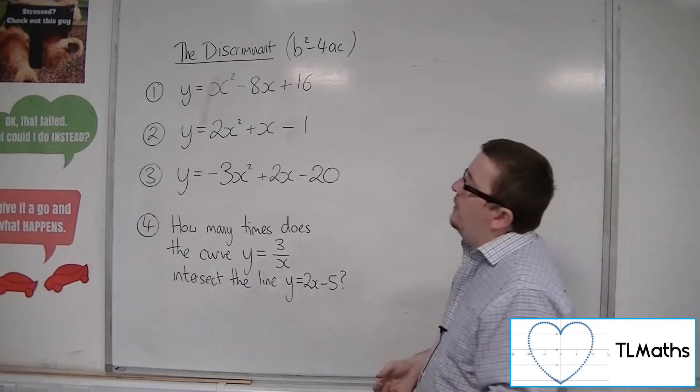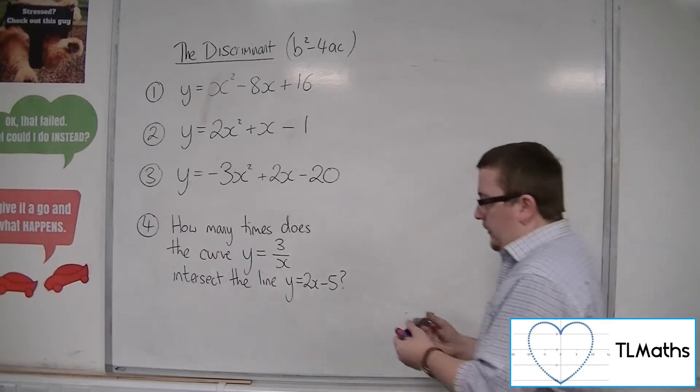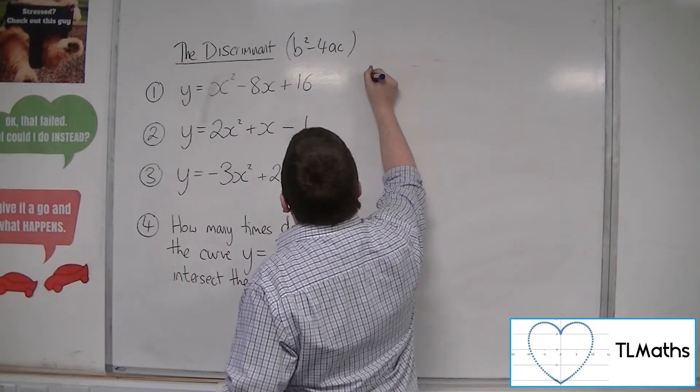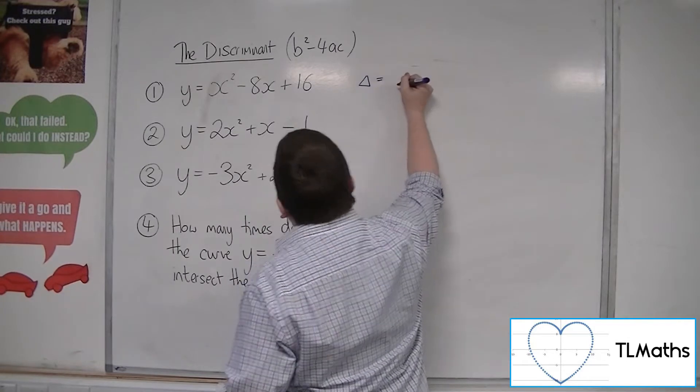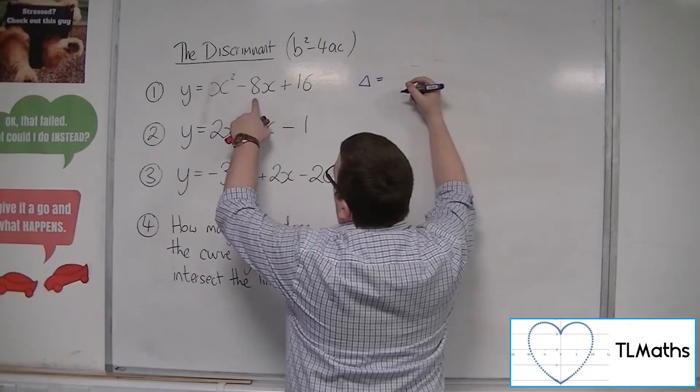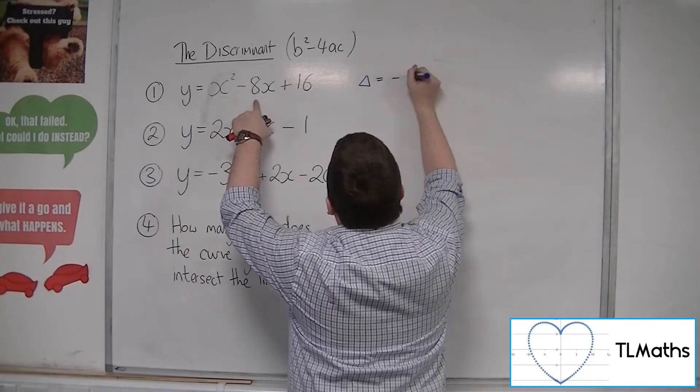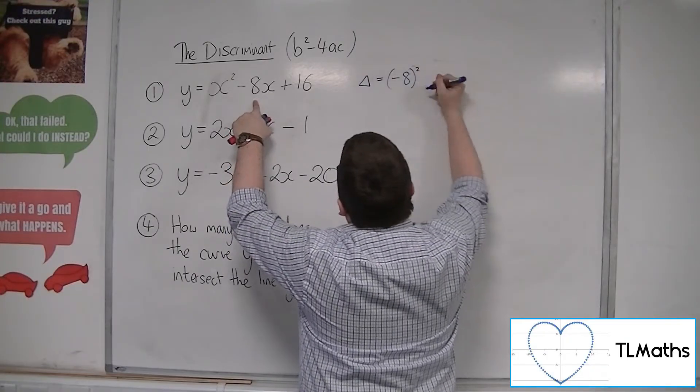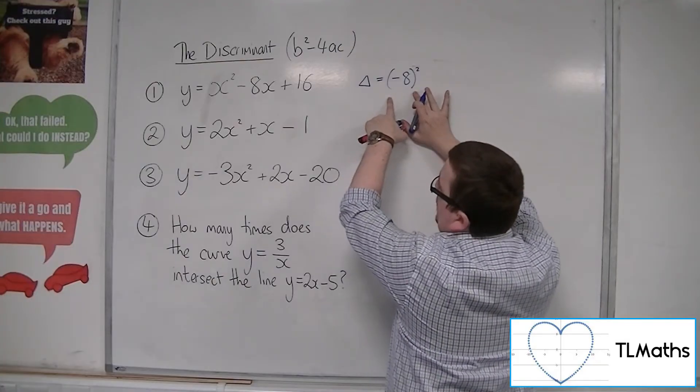So if we have a look at number 1, y equals x squared minus 8x plus 16, the discriminant in this case is b squared. So minus 8 squared. Now you can put the negative inside a bracket here.